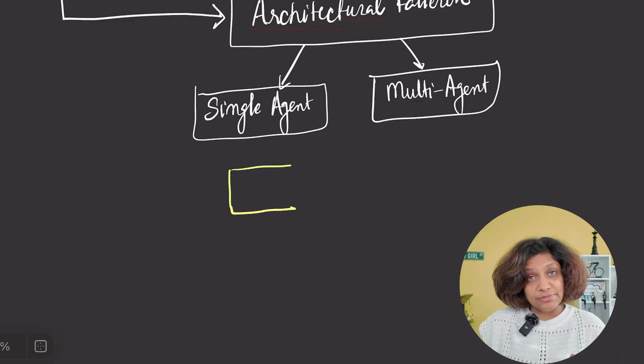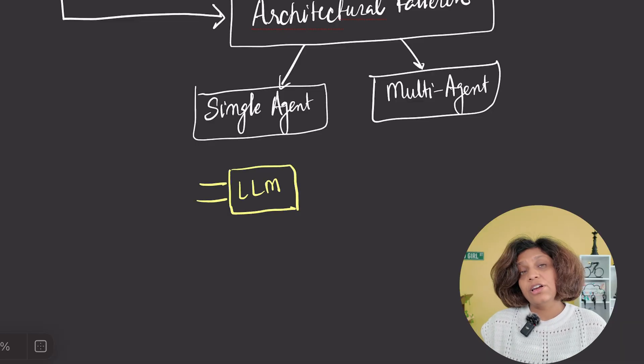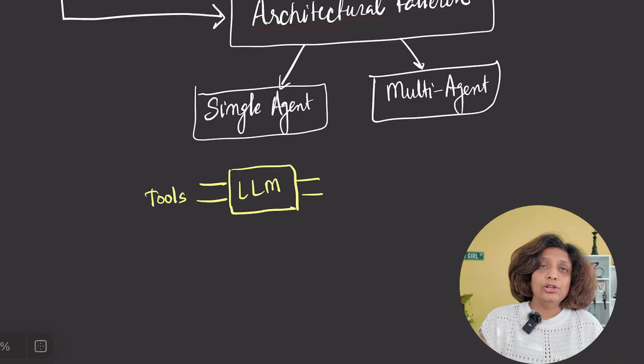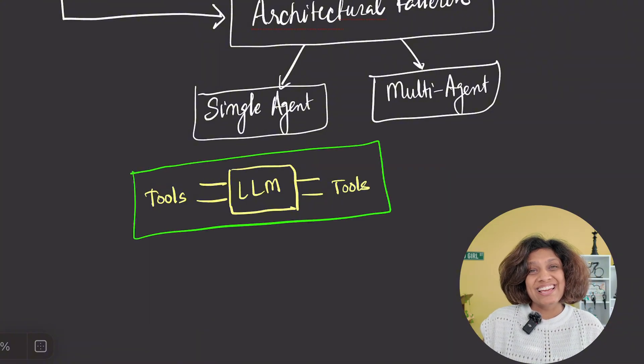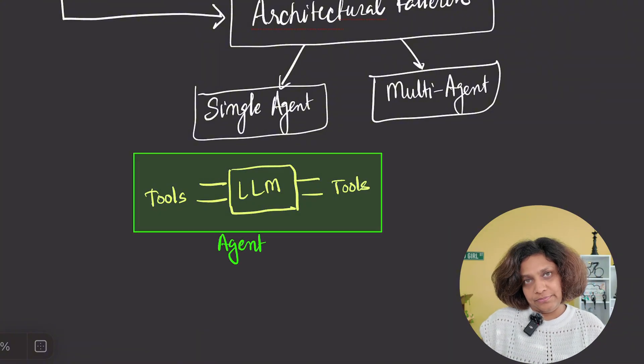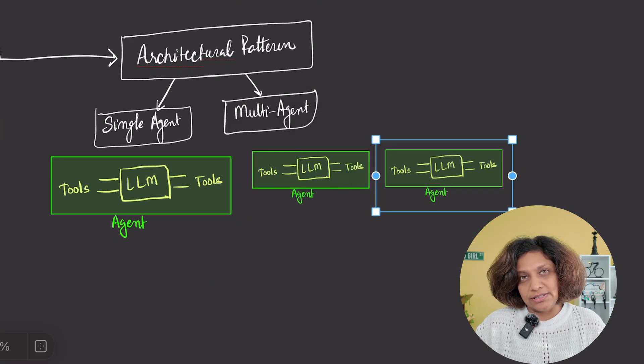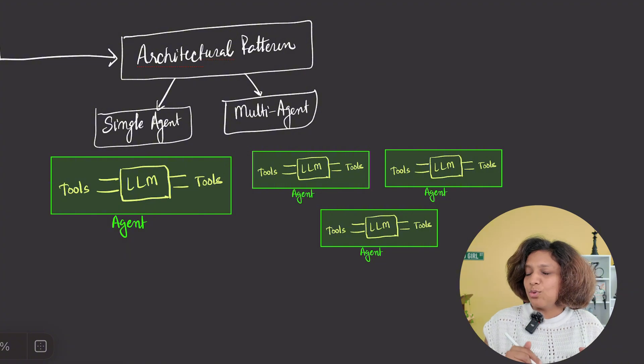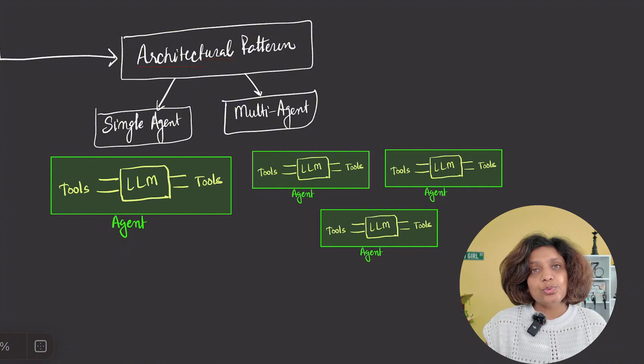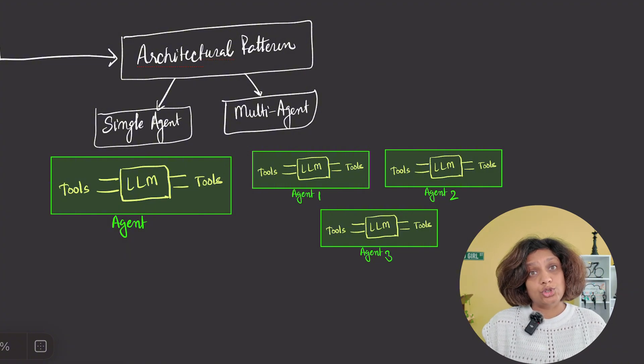You can structure your agents into two main architectural patterns. Single agent systems, which is simple and effective. One language model in a loop with a set of tools executing the entire workflow. Multi-agent systems are like teams of specialists. The workflow is distributed across multiple coordinated agents, each with their own expertise and the tools.